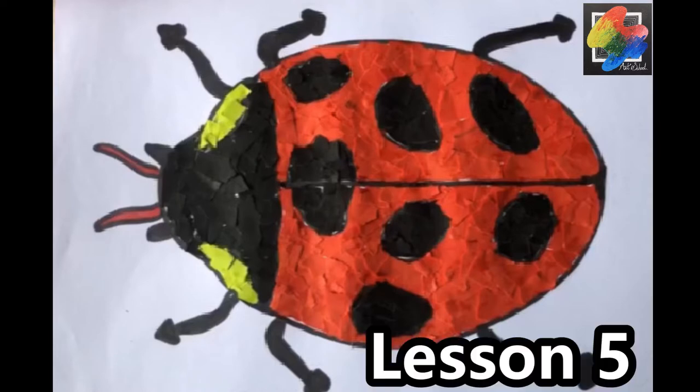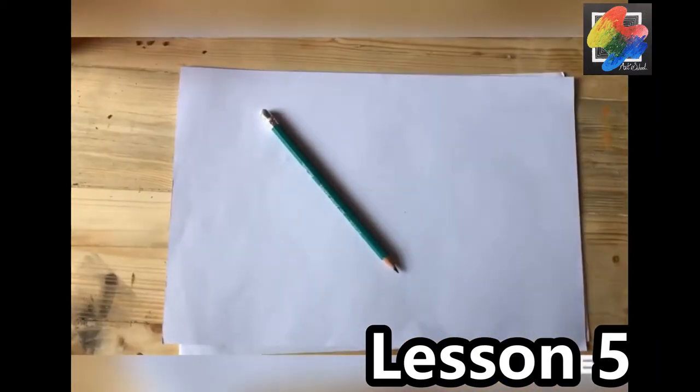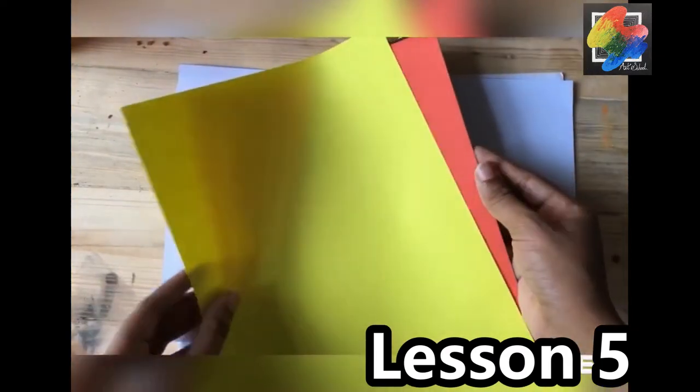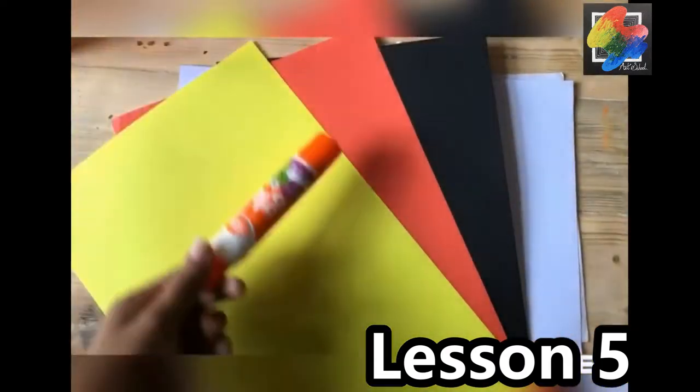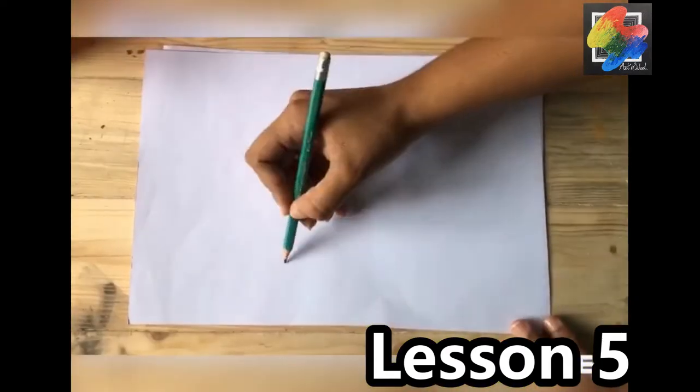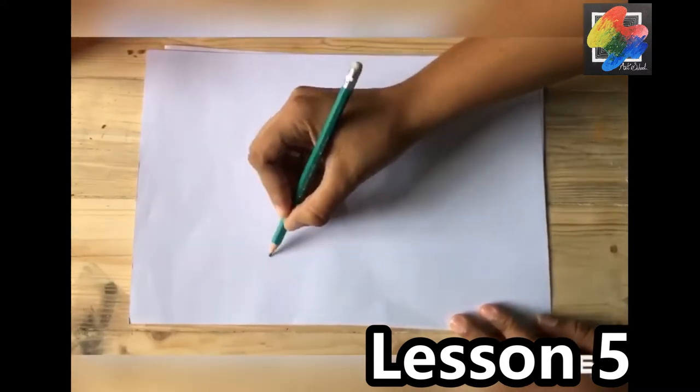Hello children, welcome back to our online art session. Today we're making a ladybird. For this you need drawing paper, a pencil, some colored papers, and glue. First, draw a big oval shape.